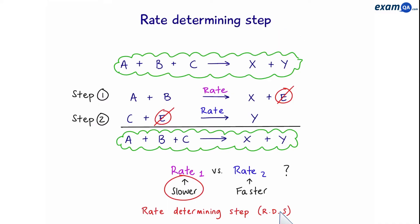Now, why is it important to be able to identify the slowest step? Let's say we really want these products, X plus Y, so we can sell them and make a huge profit. Let's say step 1 takes 10 hours and step 2 takes 30 minutes.